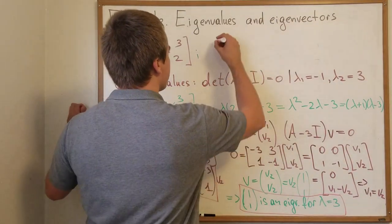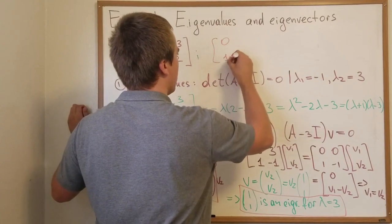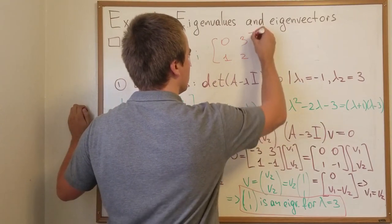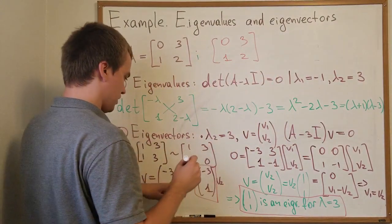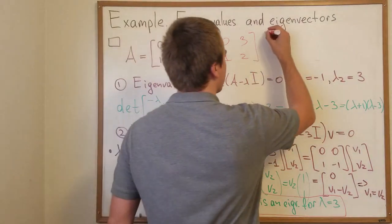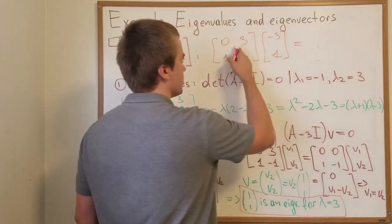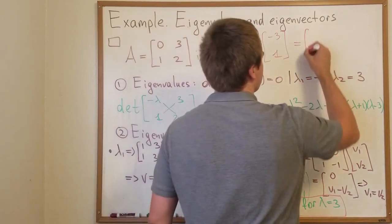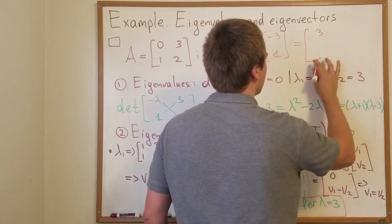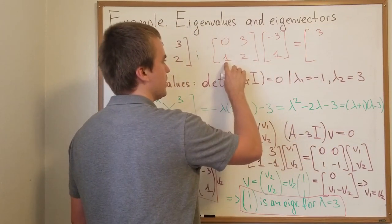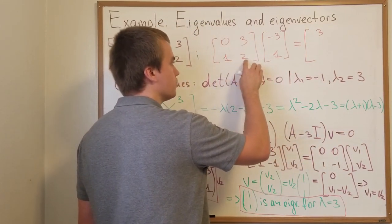If I'm going to take my matrix 0, 1, 3, 2 and multiply by negative 3 and 1. What I will get? My first entry is going to be just 3. And my second entry is going to be negative 3 plus 2 is going to be negative 1.